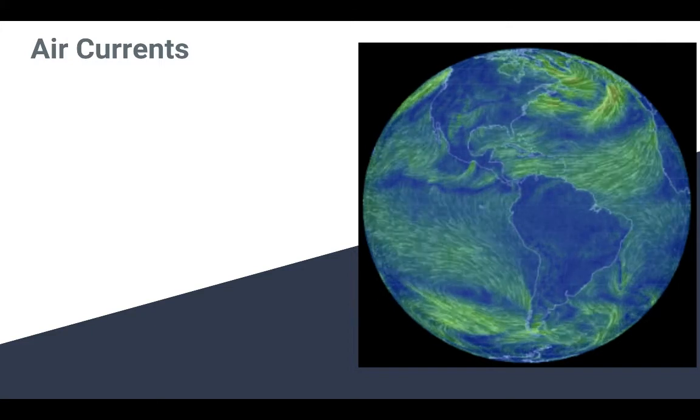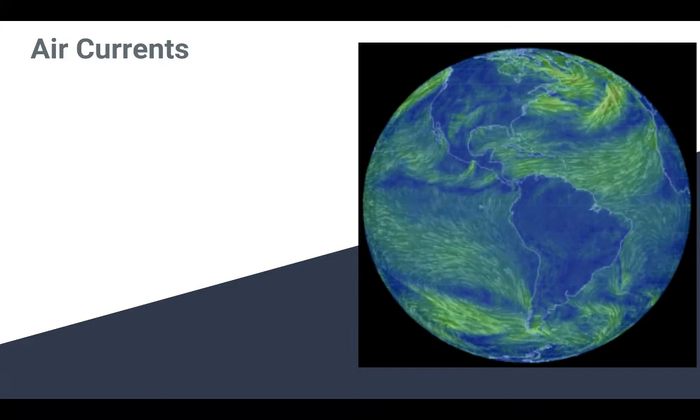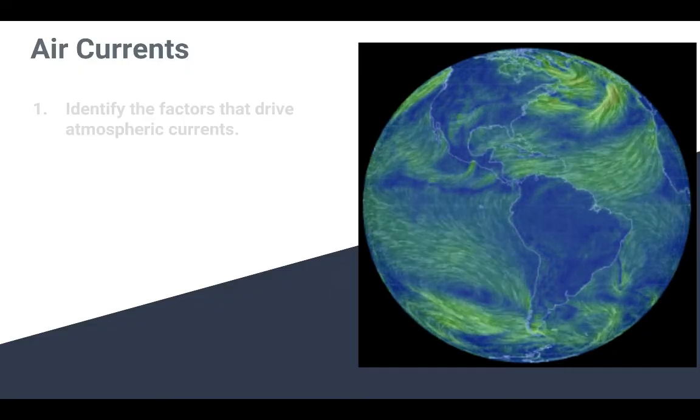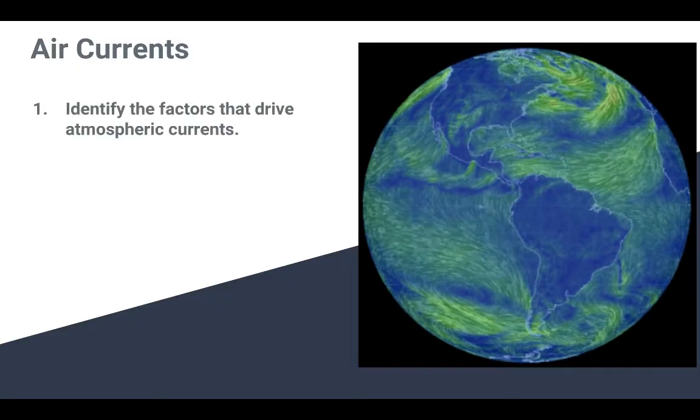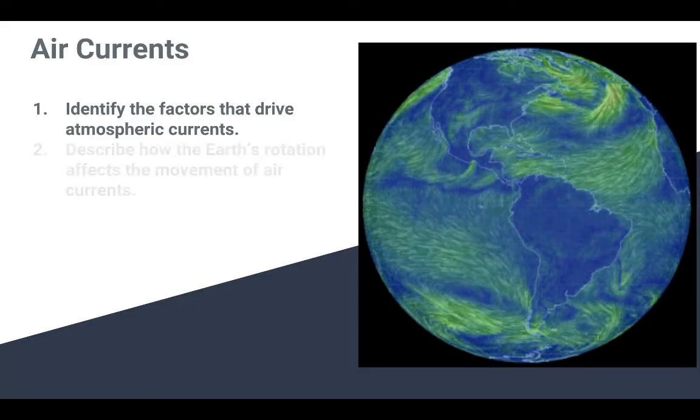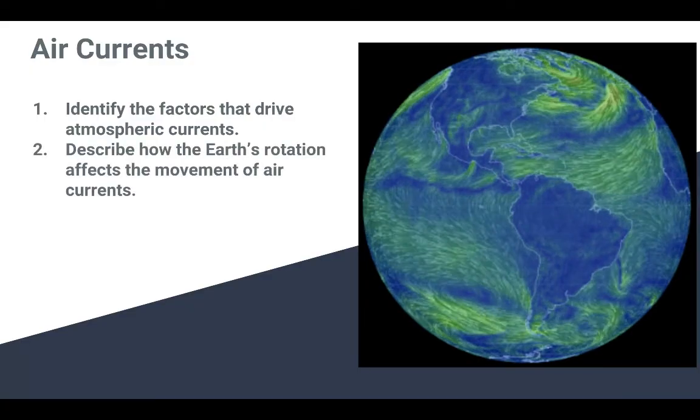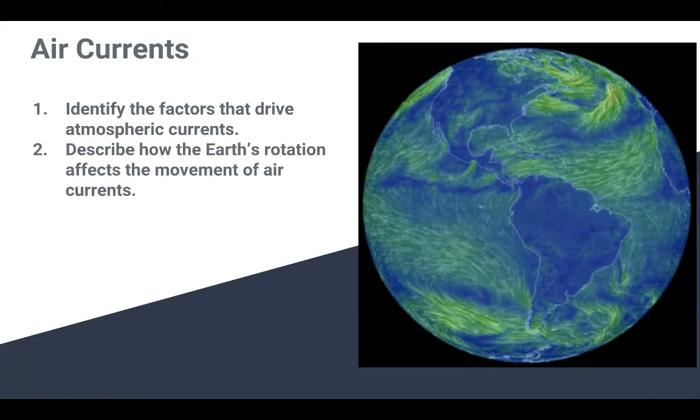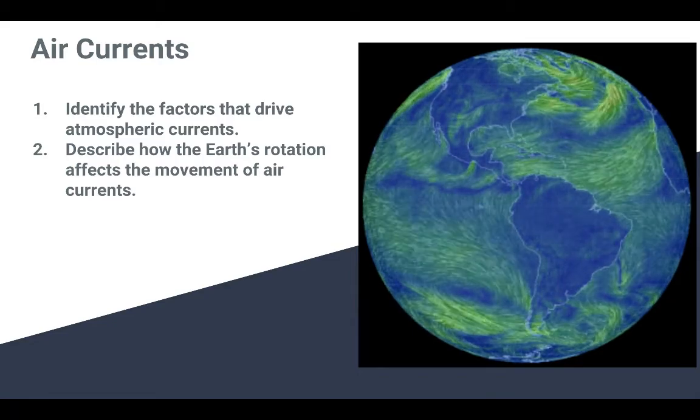Hi everyone, and welcome to another AP Environmental Science Lecture. Today, we're going to continue our lesson on air currents, and we're going to look at two things. We're going to look at the factors that drive atmospheric currents, and we're going to look at how Earth's rotation affects the movement of these currents. So now we're looking at the global scale.